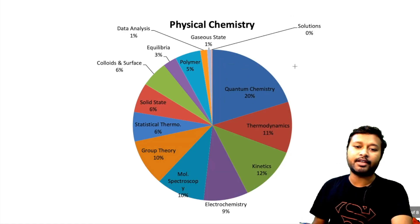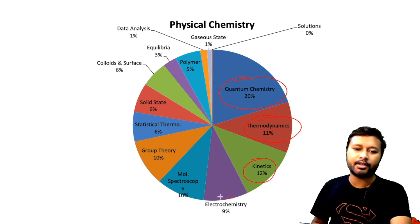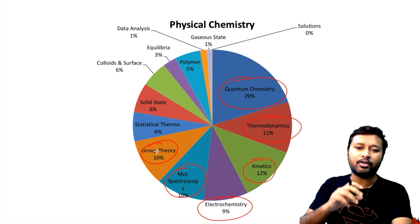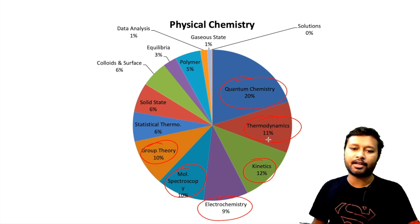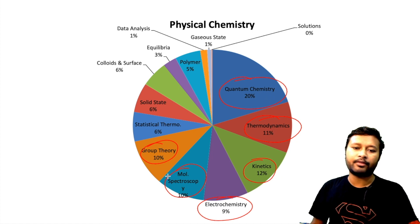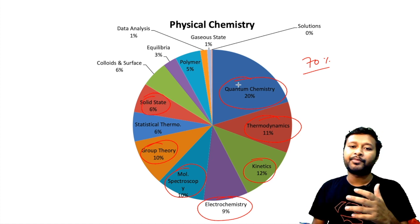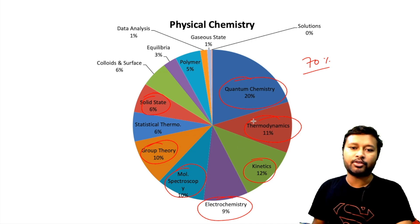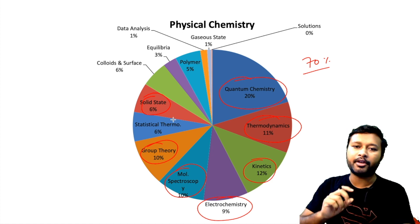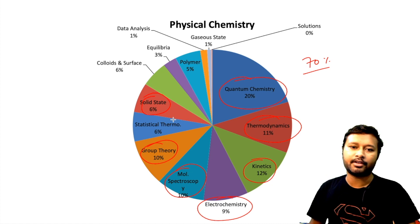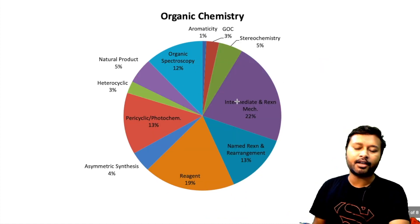For physical chemistry, the major share is covered by quantum chemistry, followed by thermodynamics, kinetics, electrochemistry, molecular spectroscopy, and group theory. Combining these topics: 20 plus 10 is 30, plus 10 is 40, plus a few more — just by these five or six topics you are covering around 70% of your total physical chemistry syllabus. Solid state is also an easier topic you can add to your preparation.